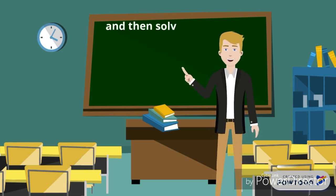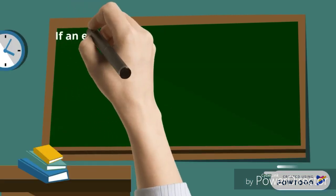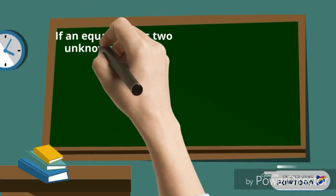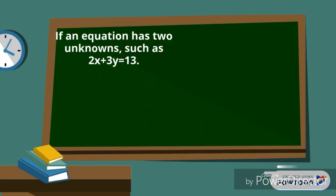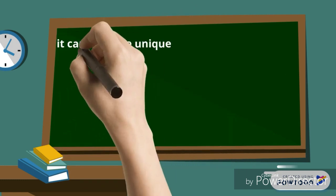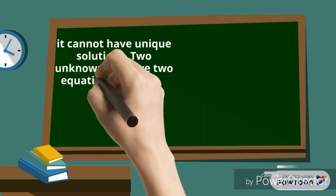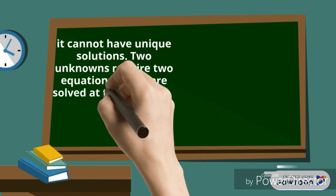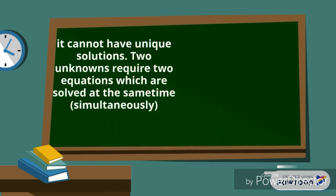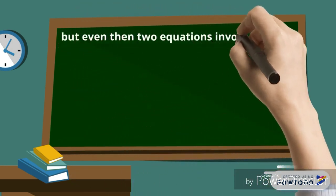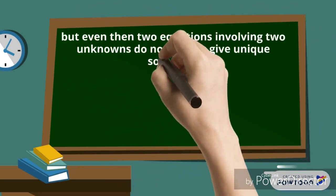And then solve simultaneous linear equations using straight lines. If an equation has 2 unknowns, such as 2x plus 3y equals 13, it cannot have a unique solution. Two unknowns require 2 equations which are solved at the same time simultaneously. But even then, 2 equations involving 2 unknowns do not always give you a solution.